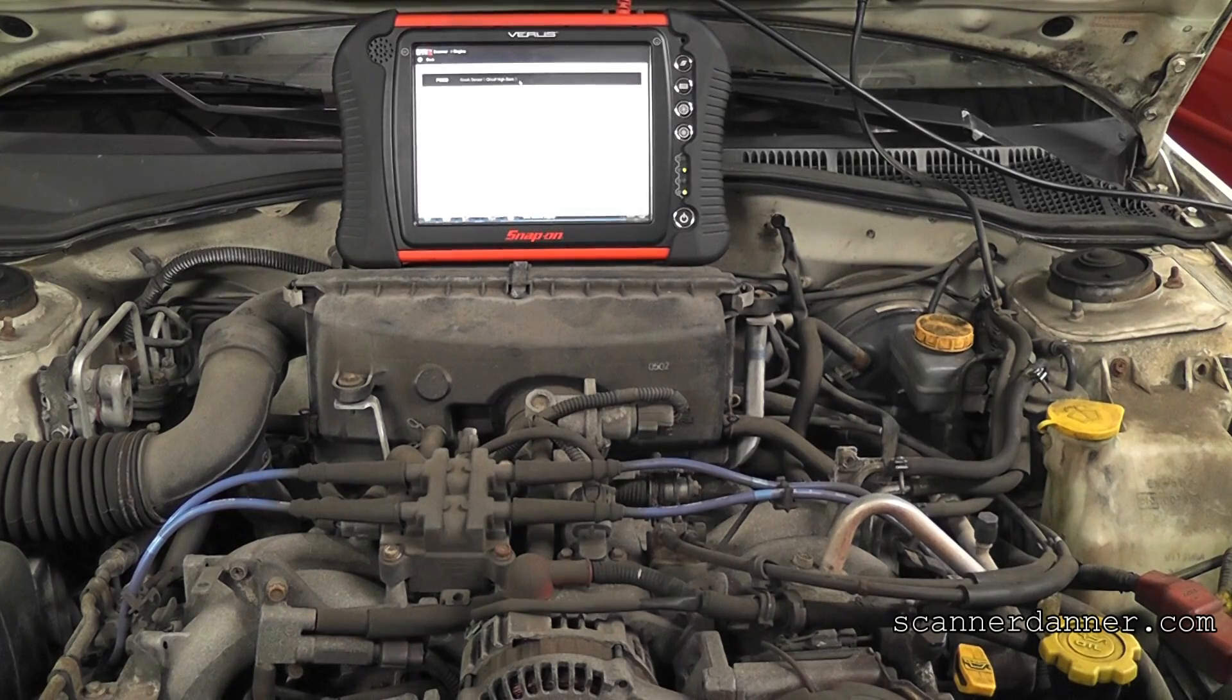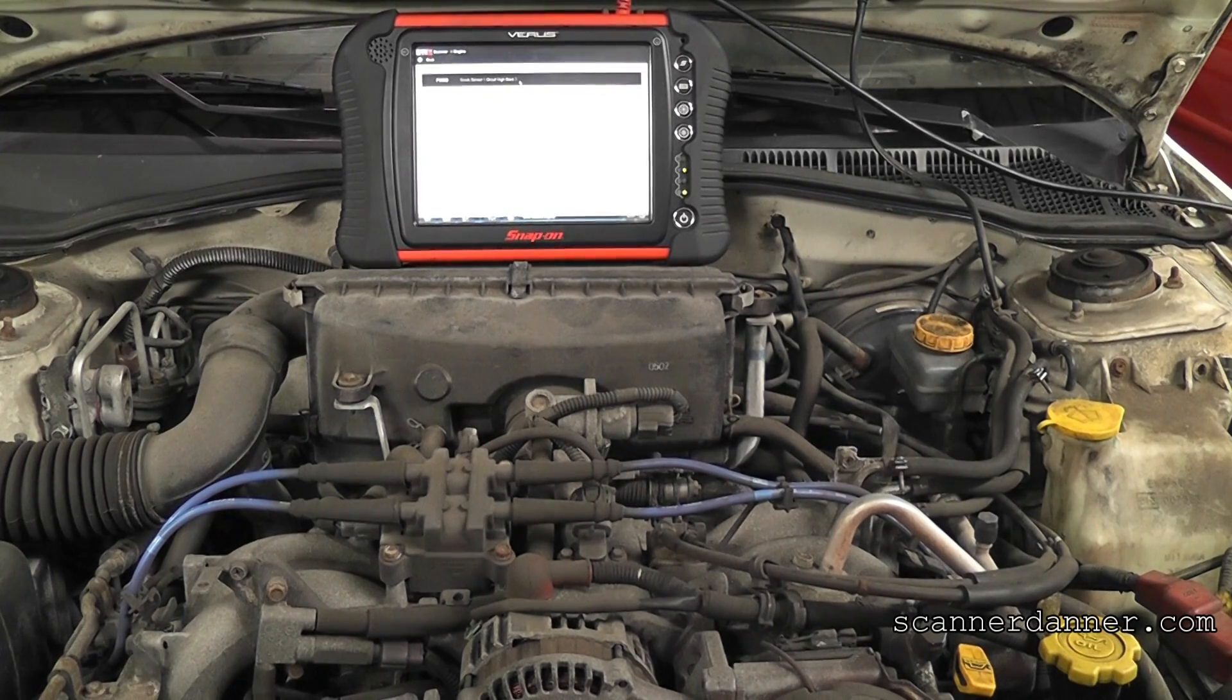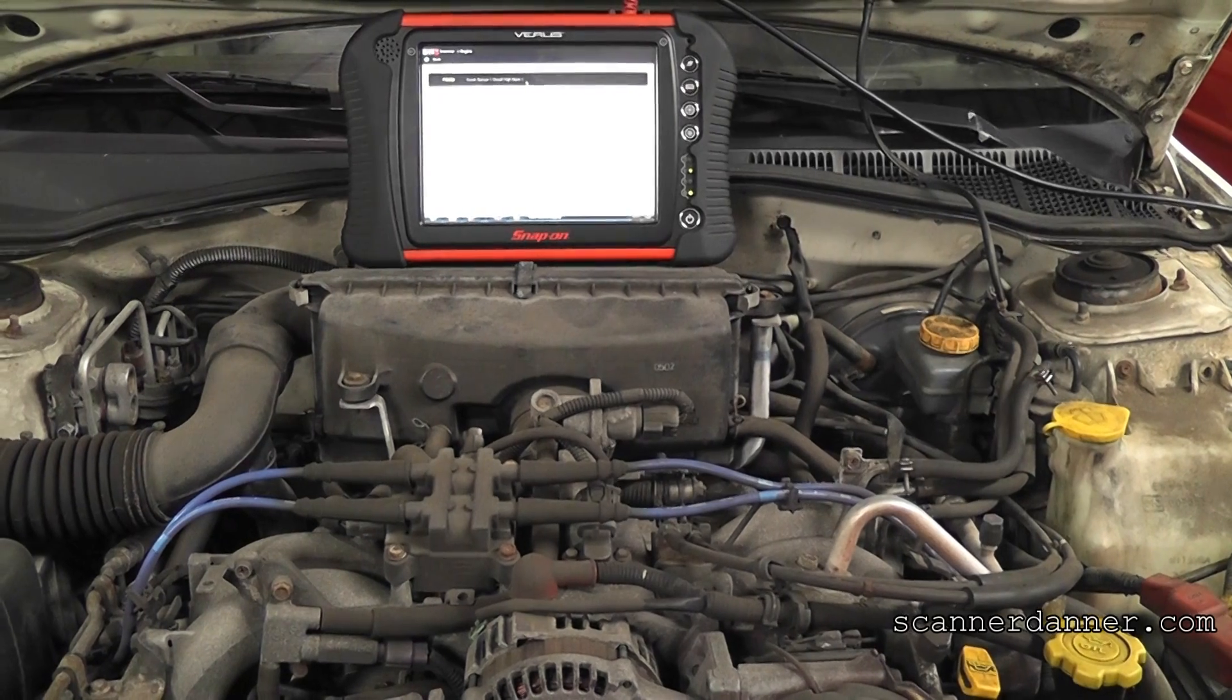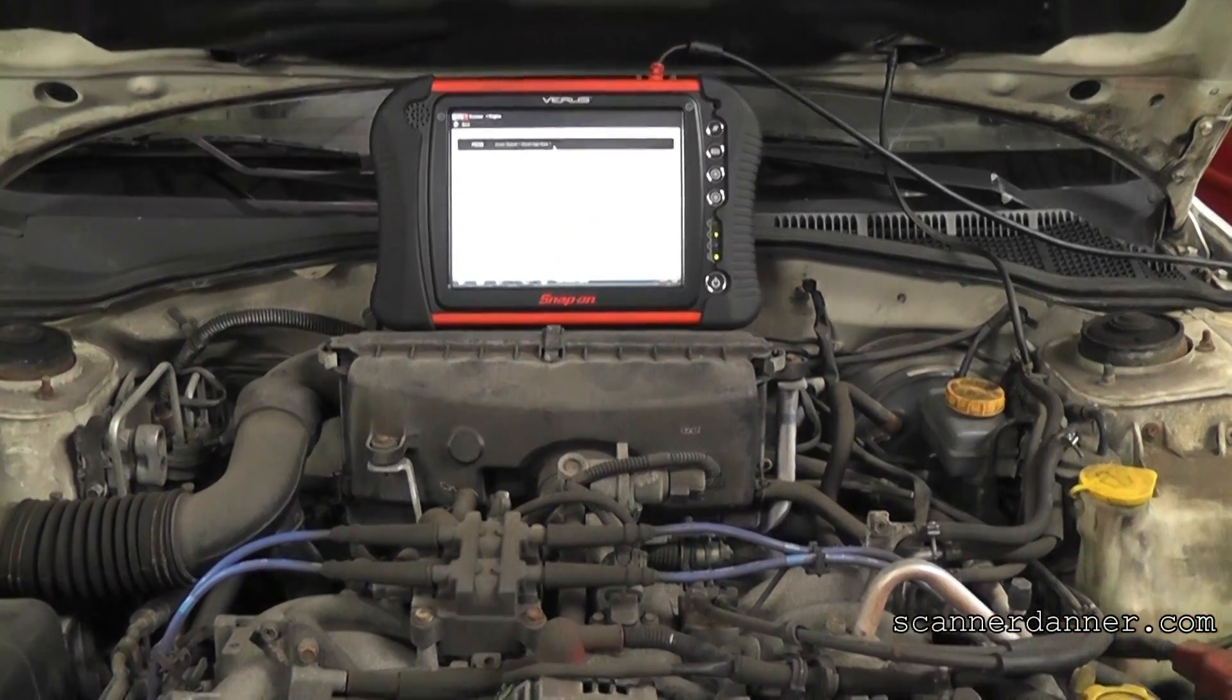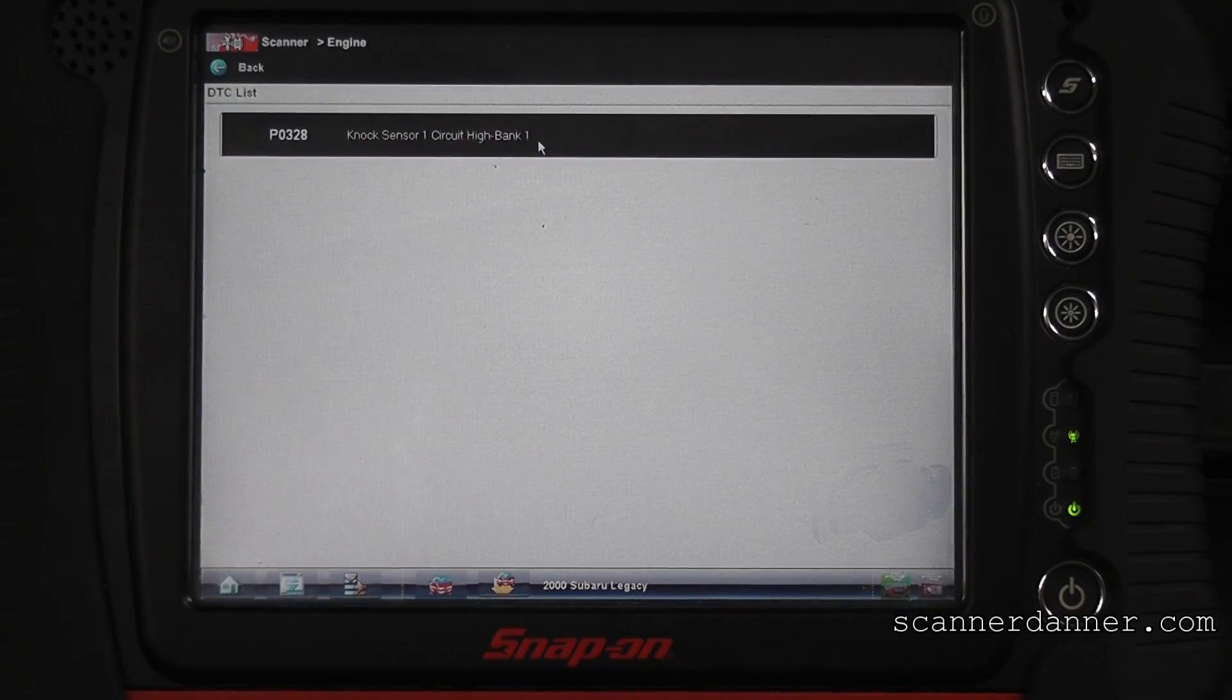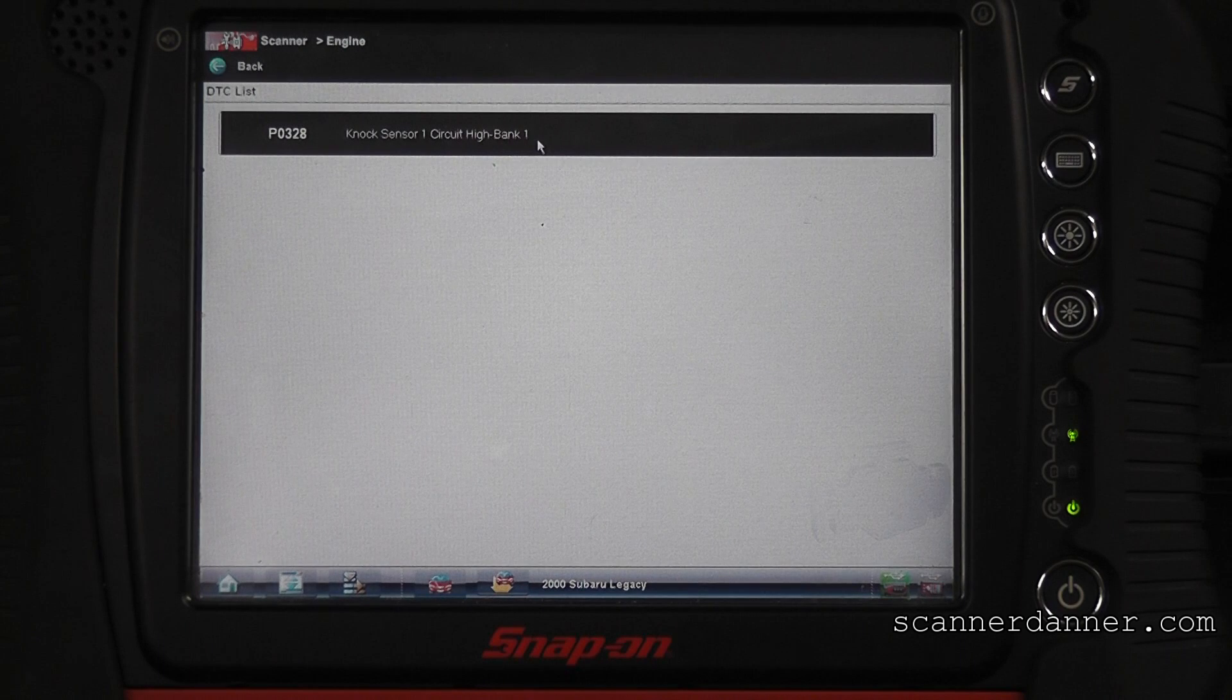Okay, 2000 Subaru Legacy with a 2.5. We got a P0328, knock sensor code in memory. We have no drivability problems, just a code and a check engine light. What I want to do is walk you guys through how I handle these knock sensor codes.